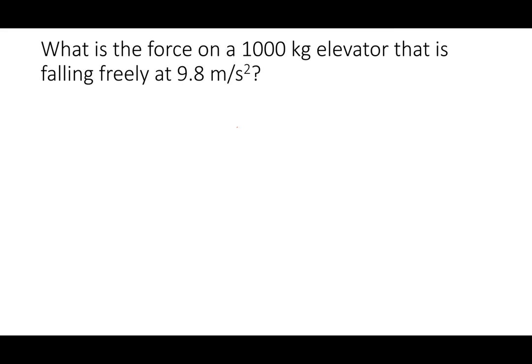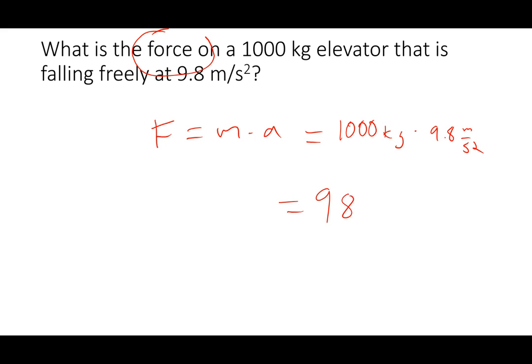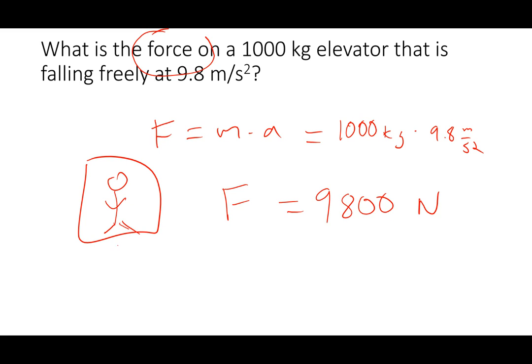Let's look at a word problem. What is the force on a 1,000 kilogram elevator that is freely falling at 9.8 meters per second squared? Force equals mass times acceleration: 1,000 kilograms times 9.8 meters per second squared gives 9,800 Newtons. Kilograms times meters per second squared gives units of Newtons — the total force acting on this object as gravity pulls it down, causing it to accelerate faster and faster.